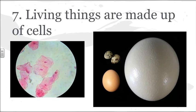The seventh characteristic of all living things is that they're made up of cells. On the left you're going to see some cheek cells — we will get your cheek cells out, stain them, and look at them underneath the microscope. On the right we have an egg cell. A chicken egg cell is actually the biggest cell that you interact with on a normal basis, although the biggest cell out there would be the ostrich egg.